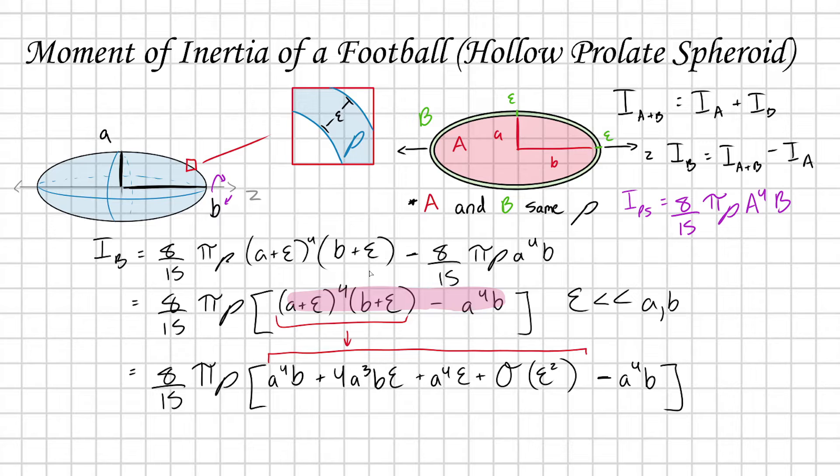We're going to get lots of terms - some with no epsilons, some with epsilons to the 1st power, and higher order terms with powers of epsilon greater than or equal to 2. When you make this approximation that epsilon is significantly less than A or B, then all these higher order terms go to zero. I'm making a first order approximation because we have a very thin shell.